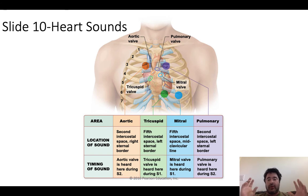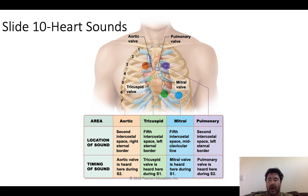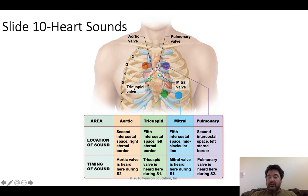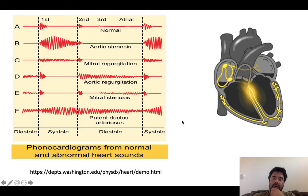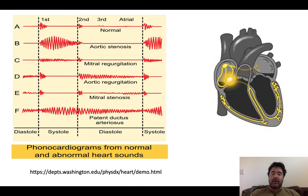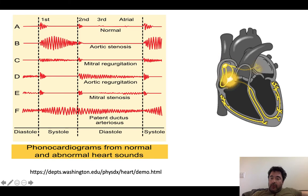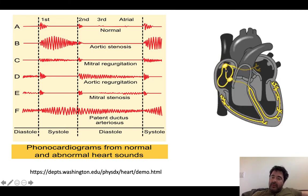When you're auscultating or listening to the heart to evaluate for a heart murmur, which is really just a problem with a valve, you need to know where to listen to each of the different valves. What I expect you to understand is what a murmur is and the difference between a systolic and a diastolic murmur. We're also going to listen to some heart sounds.